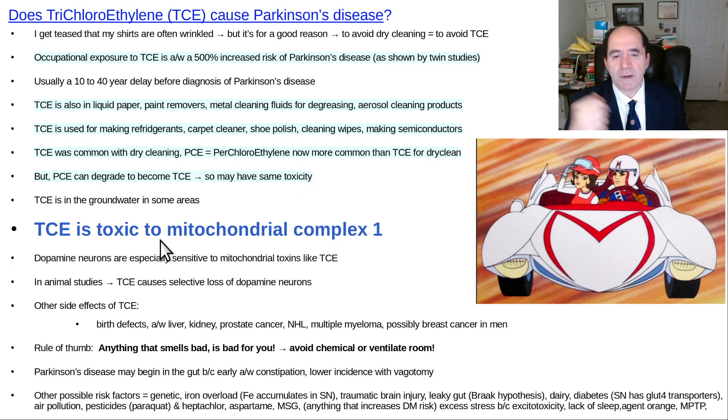TCE is toxic to mitochondrial complex one, especially the dopamine neurons in the substantia nigra, which is a spot where Parkinson's disease is thought to have its epicenter of problems. In animal studies, you give them TCE and it destroys the dopamine neurons. It'll cause birth defects. It's associated with multiple types of cancer, including liver, kidney, prostate cancer. NHL is non-Hodgkin's lymphoma. It's also associated with increased risk of multiple myeloma, possibly with increased risk of breast cancer in men.